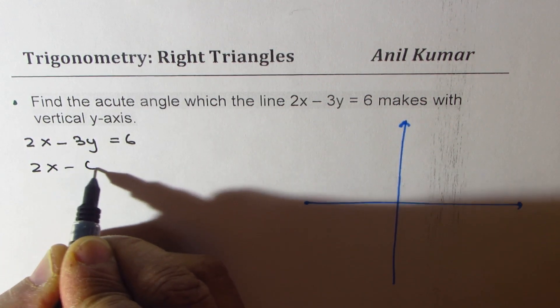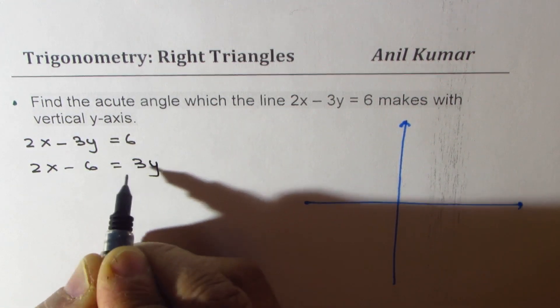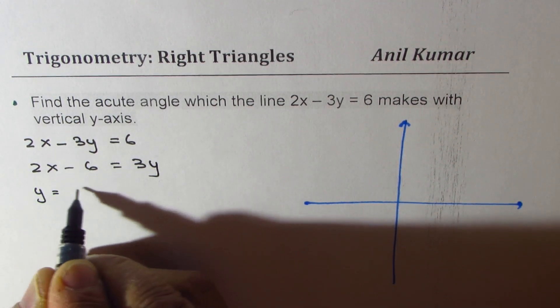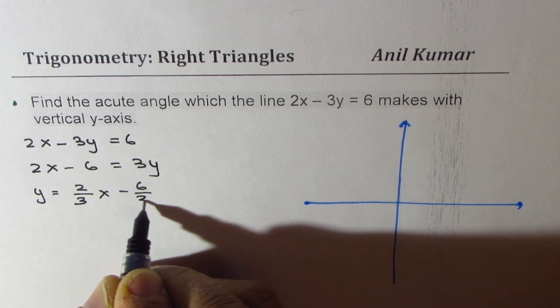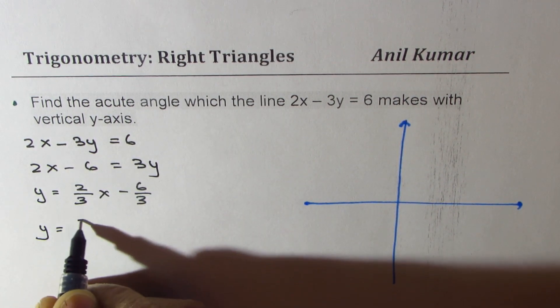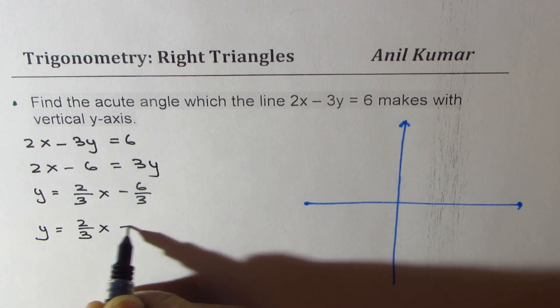We get 2x minus 6 equals to 3y or we could write y equals to 2 over 3x minus 6 over 3 which is y equals to 2 over 3x minus 2.